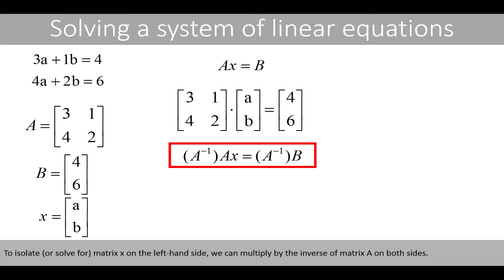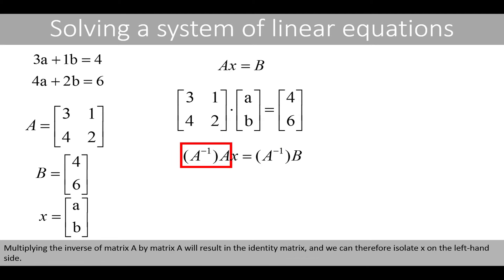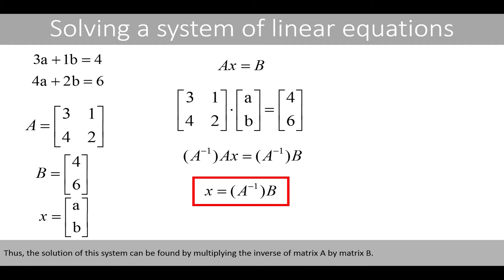To isolate or solve for matrix X on the left-hand side, we can multiply by the inverse of matrix A on both sides. Multiplying the inverse of matrix A by matrix A will result in the identity matrix, and we can therefore isolate X on the left-hand side. Thus the solution of this system can be found by multiplying the inverse of matrix A by matrix B.